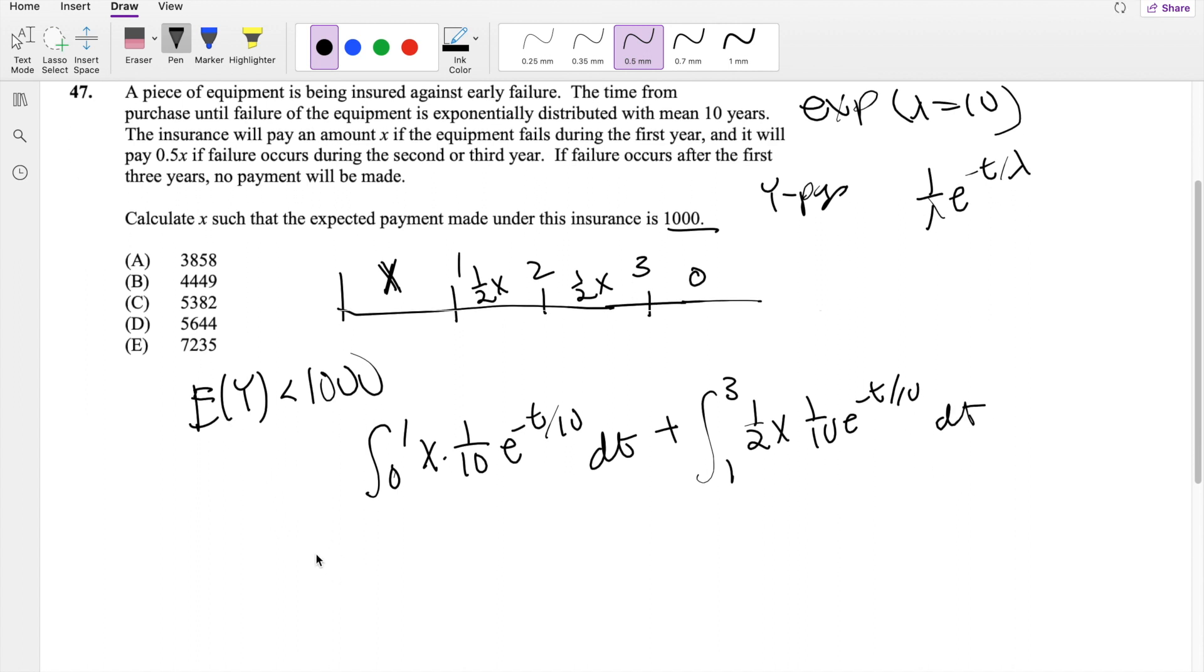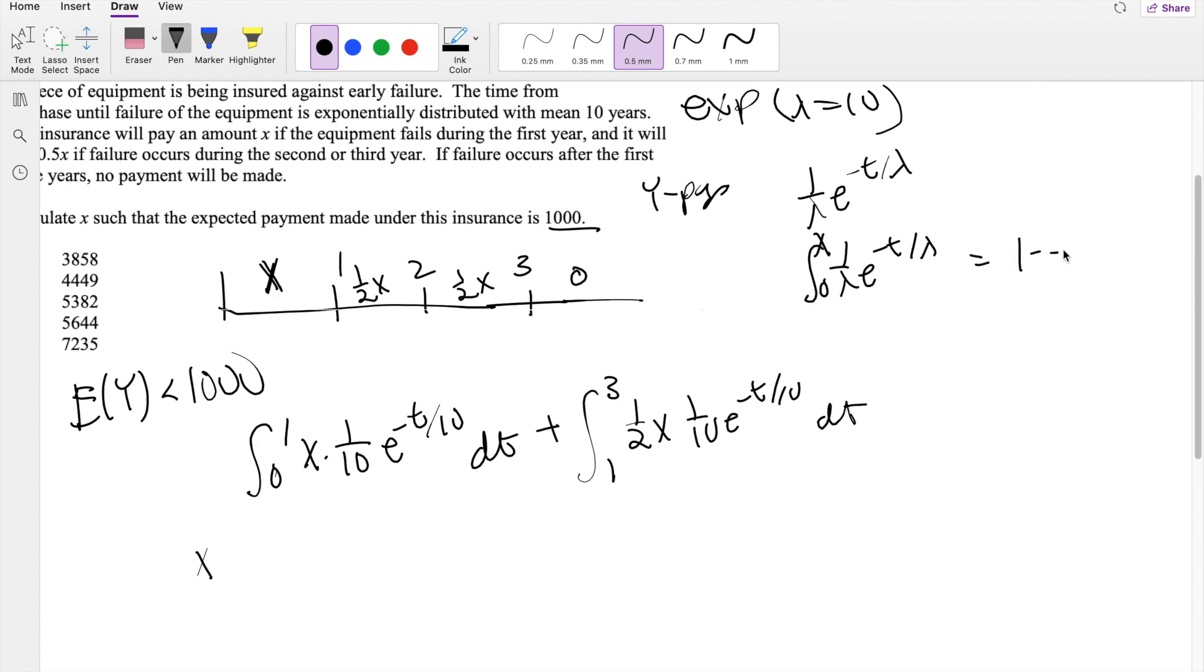Because X is just a constant, I can throw that out. But then this is just basically a CDF. So we know 1 over lambda, E to the negative T over lambda, going from 0 to some number X, this is exactly equal to 1 minus E to the negative X over lambda.